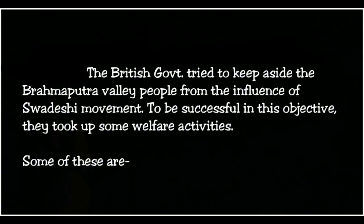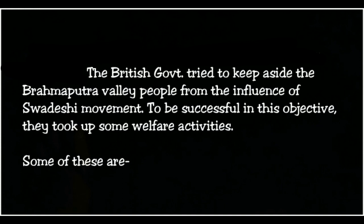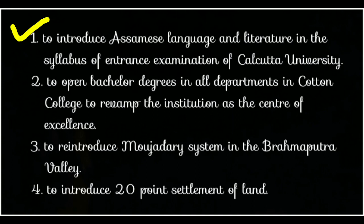The British government tried to keep the Brahmaputra Valley people away from the influence of the Swadeshi movement. To be successful in this objective, they took up some welfare activities.